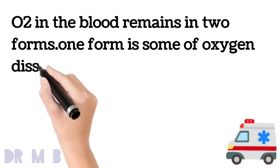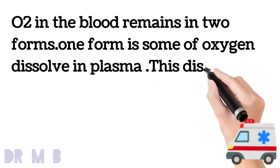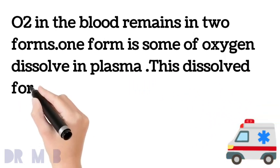The dissolved form of oxygen in blood plasma is partial pressure of oxygen. This is measured by doing arterial blood gases.